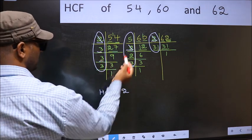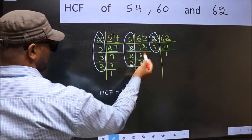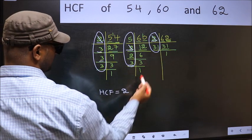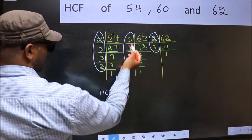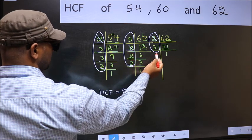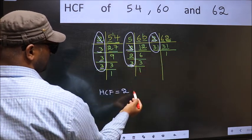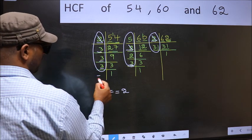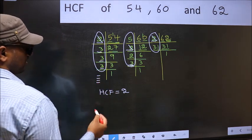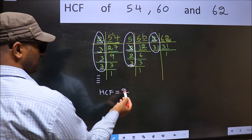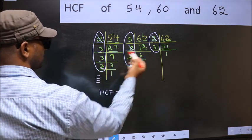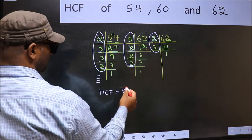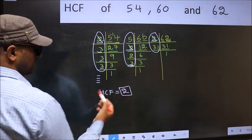Next number 3. Do we have 3 here? Yes. But it is not present here. So we should not write here. Next number 3. Do we have 3 here? Yes. But 3 is not present here. So we should not write here. No more numbers have been left out. So we got only one number 2 present in all the 3 places. So 2 itself is our HCF.